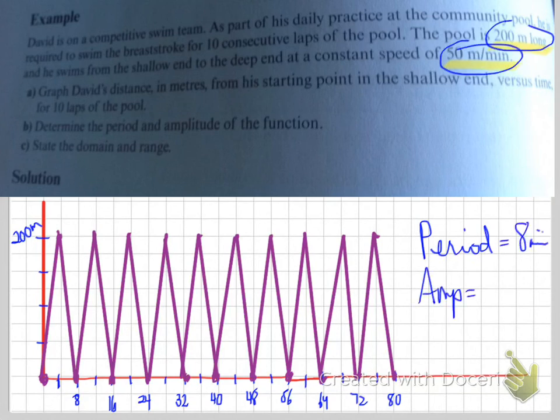So the period of this is actually 8 minutes. The amplitude is going to be 200 minus 0 divided by 2. The amplitude is 100 meters.